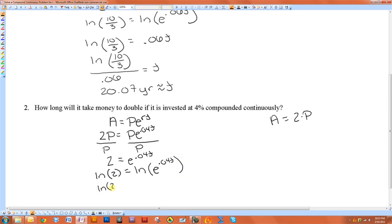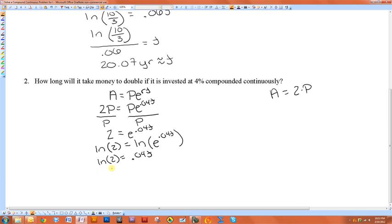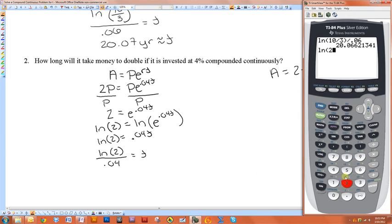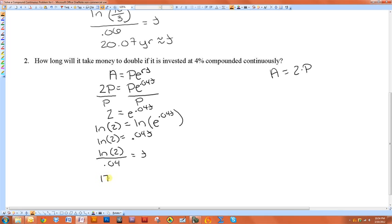I get the natural log of 2 equals .04T. Then I divide both sides by .04, so the natural log of 2 divided by .04 equals T. That would be the exact solution, but we don't want an exact solution. We want to get a value that makes sense in terms of years. So 17.33 years would be approximately equal to T.